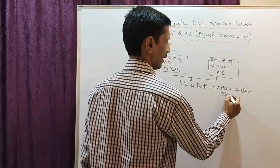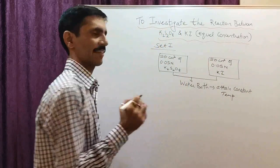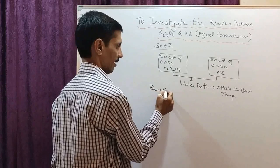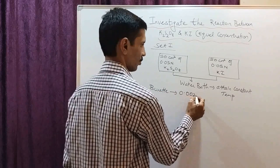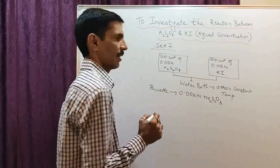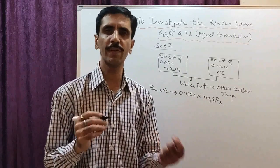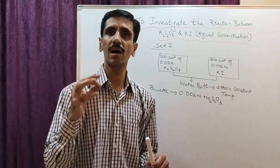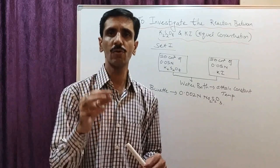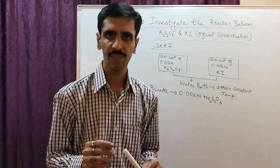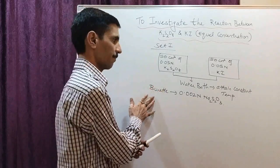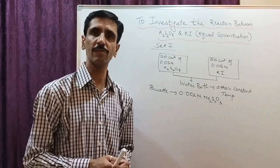Since this is a titration, we require a burette. The burette is filled with 0.002 normal sodium thiosulfate, Na2S2O3. This is the standard solution — the solution of known concentration — that we will use for the titration.